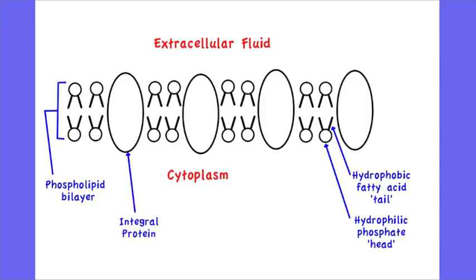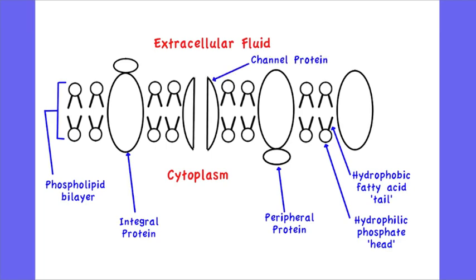The plasma membrane also has proteins in it. These ones that I've shown here are integral proteins, but you can also have peripheral proteins. In addition to that, some of those proteins are channel proteins.